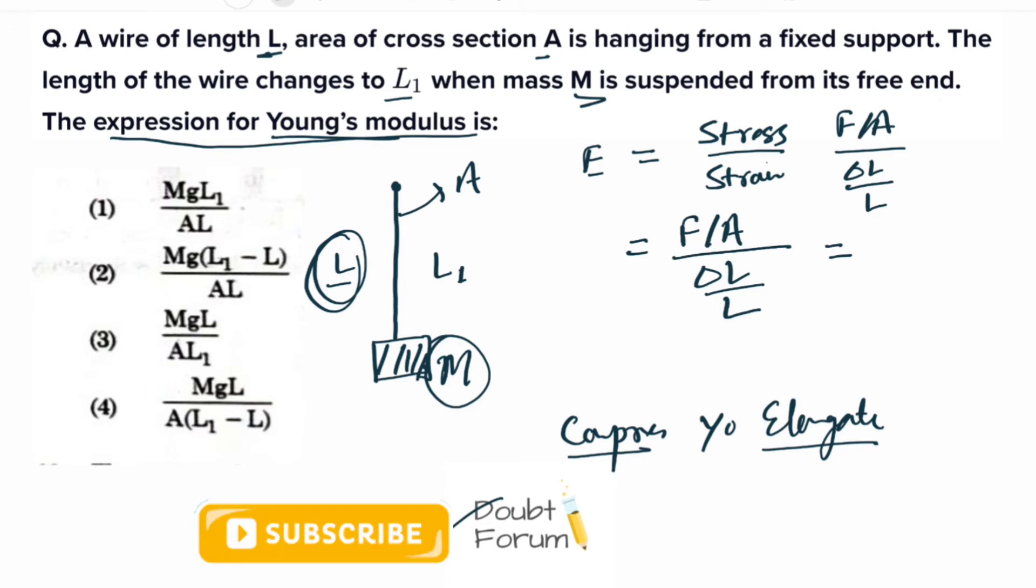From here, the force which is being created on this system is due to this mass M. So force due to mass M is nothing but M times g. So in place of F we will write Mg divided by A, the area of this wire.